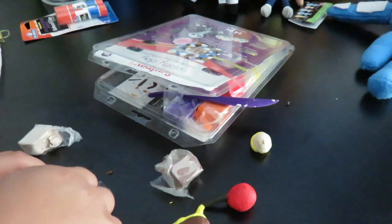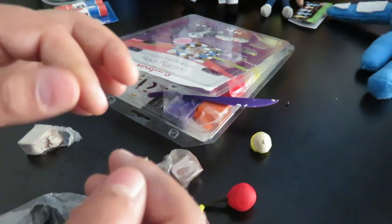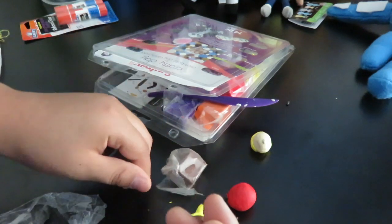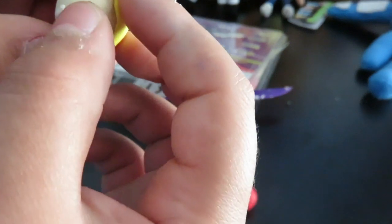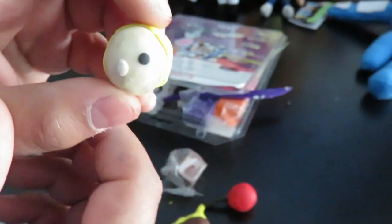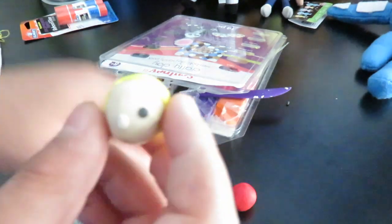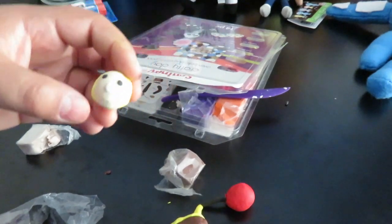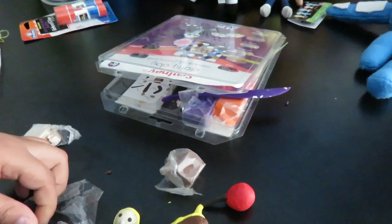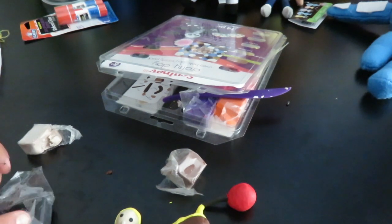Now we're going to be making Georgie's eyes. Get your black clay, make two little balls. Here's one eye. And here's two eyes. And I'm going to give him his little smile.